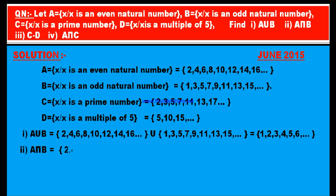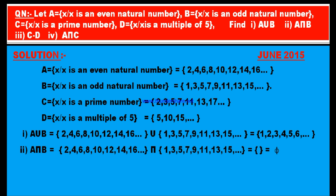The second part is A intersection B. A = {2, 4, 6, 8, 10, 12, 14, 16, ...} intersection B = {1, 3, 5, 7, 9, 11, 13, 15, ...}. If you observe these two sets, there is no common element. Therefore, A intersection B is equal to an empty set — also called null set or void set.